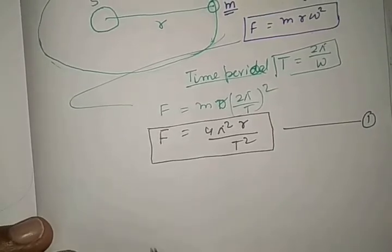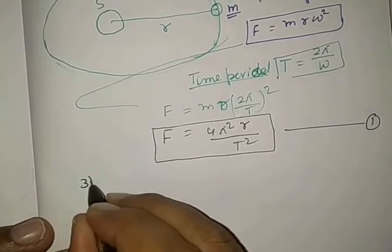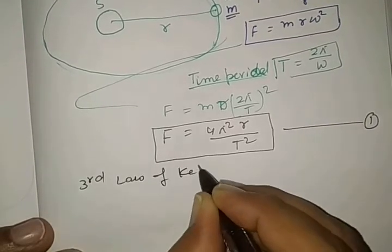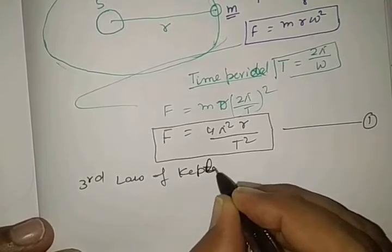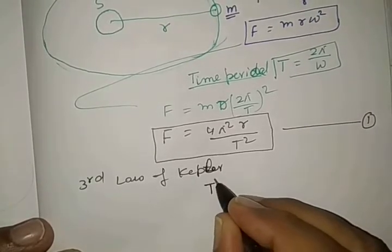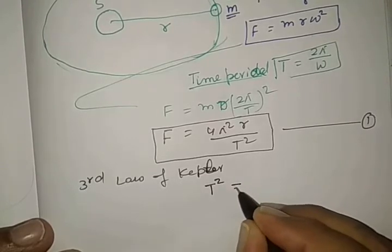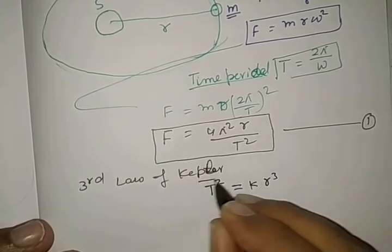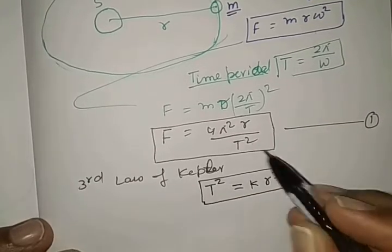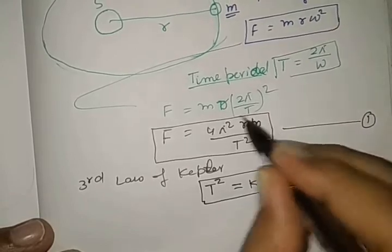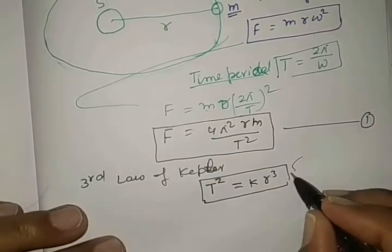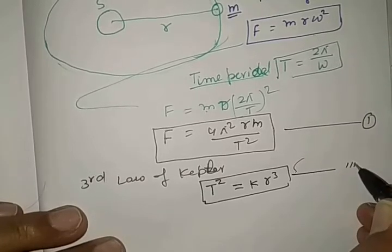Now, using third law of Kepler's, that is, square of time period is equal to k r cube. See here, in the formula, there is m also. M is carried here. So, and it is represented by equation number 2 here.